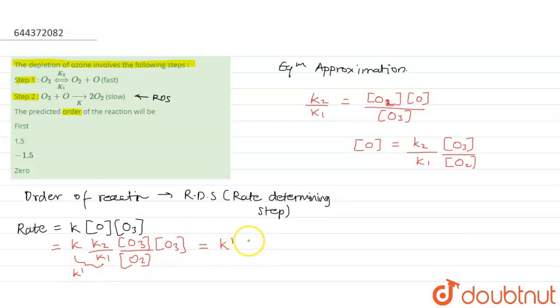So k dash into... now O3 will become square, [O3] squared divided by [O2]. Okay, which could be further written as k' times [O3] squared times... this will go up and be written as inverse, [O2] to the minus one. Okay, so from here...